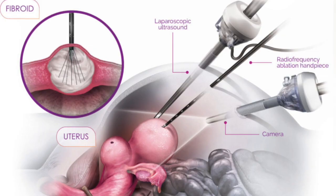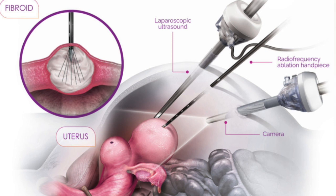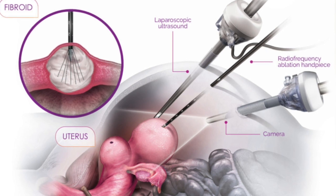Fibroid degeneration occurs when the uterine fibroid undergoes changes, causing them to shrink, change their consistency, or even die off. There are four main types of fibroid degeneration including hyaline degeneration, red degeneration, cystic degeneration, and also calcific degeneration.